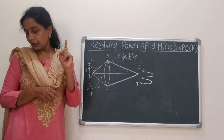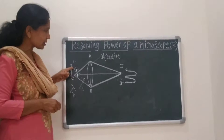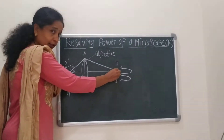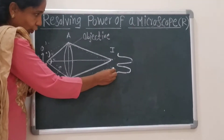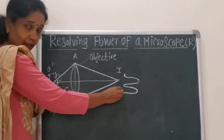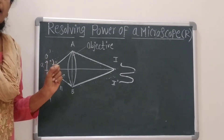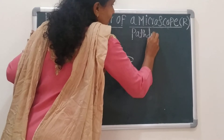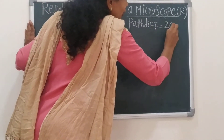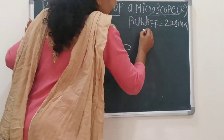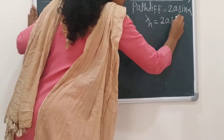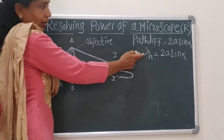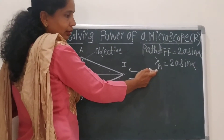According to the scientist Rayleigh, the first dark ring due to O' coincides with I. The nature of the illumination depends upon the path difference. The path difference is given by the equation: 2A sine(alpha).